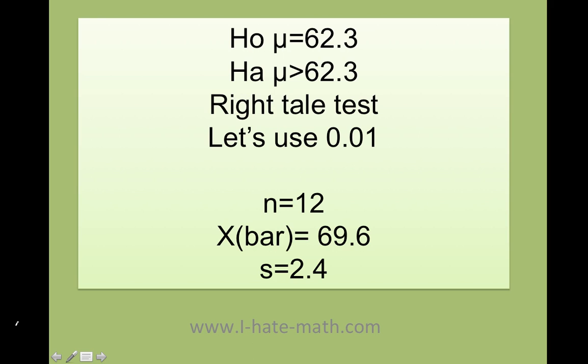Okay, so let's go ahead and set up our test. Now my null is gonna be that the mean equals 62.3. Remember this one is always equals. And then remember my claim, which is the alternative, is that the mean is greater than 62.3. Since this is greater than, this is gonna be a right tail.